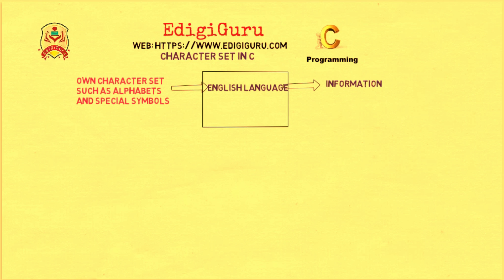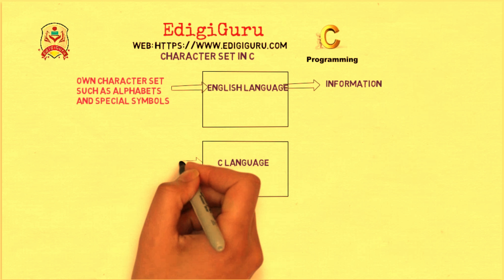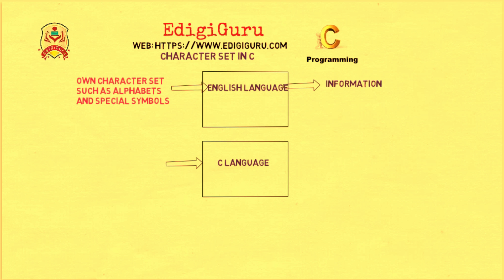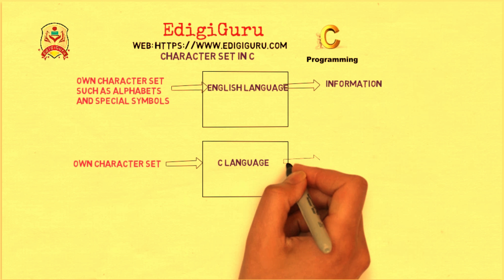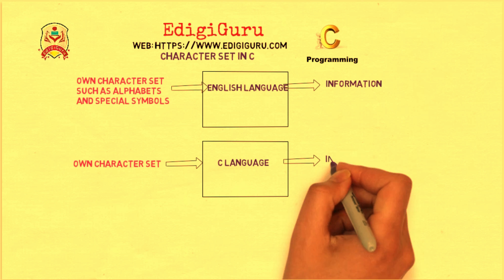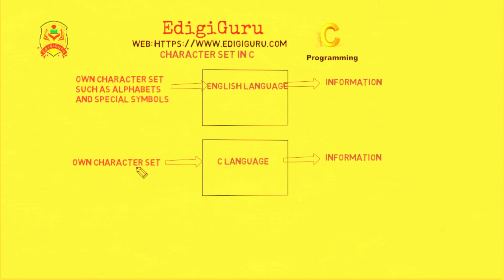Similarly, the C language also has a well-known character set in order to represent information. C language also has a well-known character set which includes alphabets, digits, and special symbols.